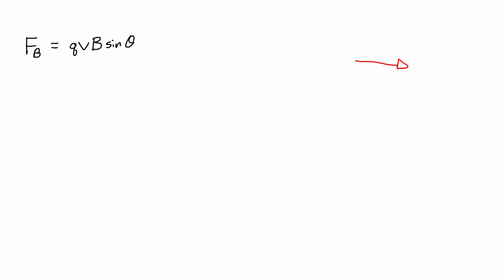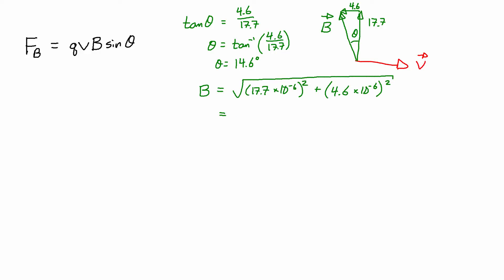If you remember, we had the velocity off to the right that was east, and we had the magnetic field up and to the left that was west of north. We had 17.7 microteslas up and we had 4.6 microteslas to the left. We can find that the angle between north and the magnetic field is going to be 14.6 degrees. In order to use this equation we also need to know the overall magnitude of the magnetic field which again comes from Pythagorean theorem and we get 18.3 microteslas.